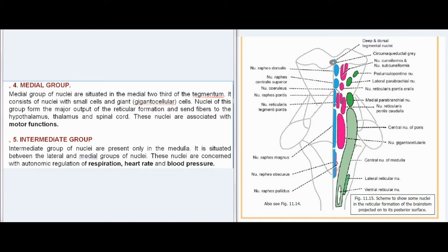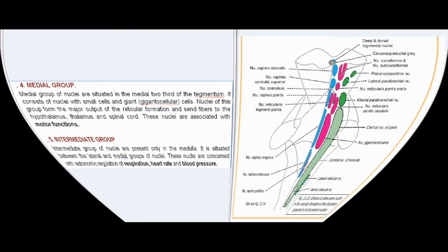Fifth, the Intermediate group: intermediate group of nuclei are present only in the medulla. It is situated between the lateral and medial groups of nuclei. These nuclei are concerned with autonomic regulation of respiration, heart rate, and blood pressure.